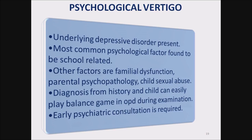Psychological vertigo — again, most common in children. Underlying depressive disorder is present. Most common psychological factors are school-related. Other factors include familial dysfunction, parental psychopathology, and child sexual abuse. Diagnosis is from history; the child can easily play a balance game in the OPD during examination. Early psychiatric consultation is required.